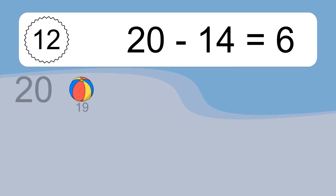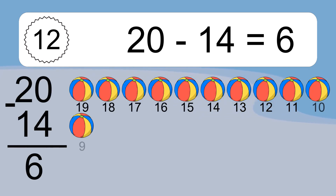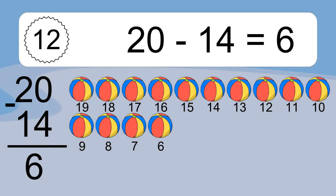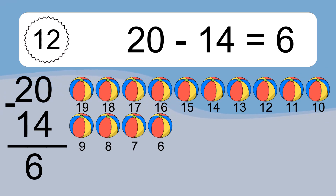20 minus 14 equals 6. Let's count it: 19, 18, 17, 16, 15, 14, 13, 12, 11, 10, 9, 8, 7, 6.